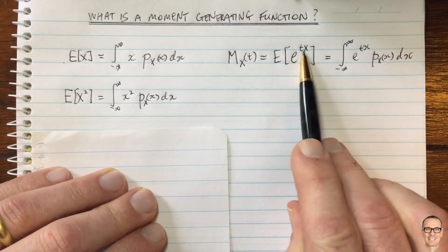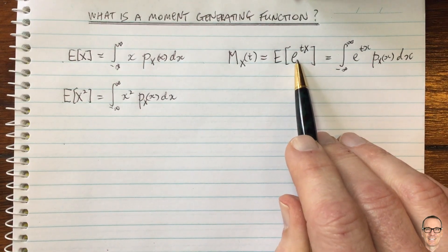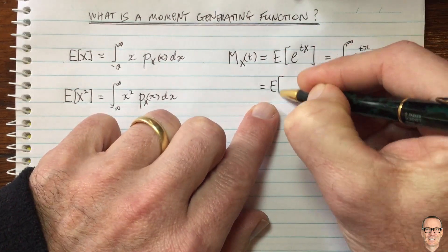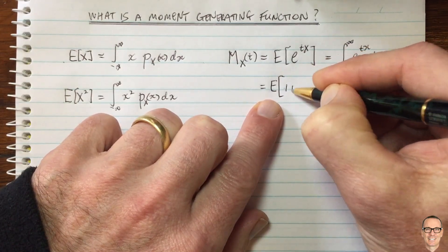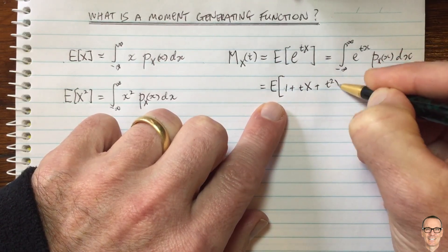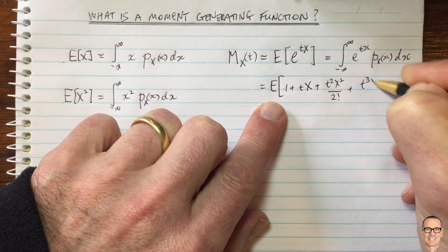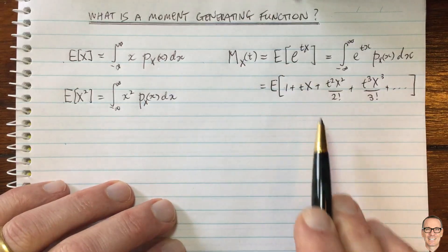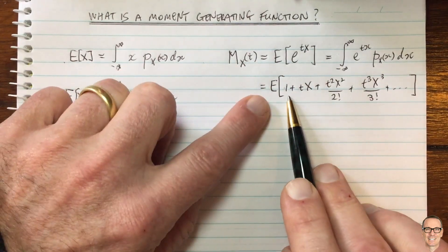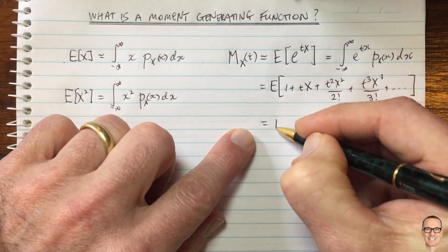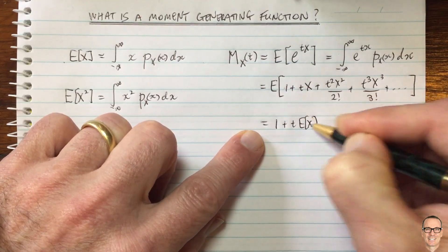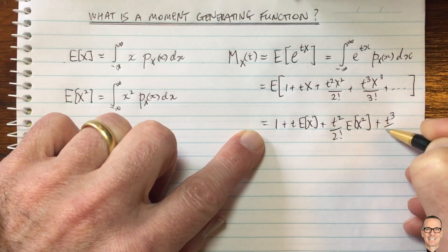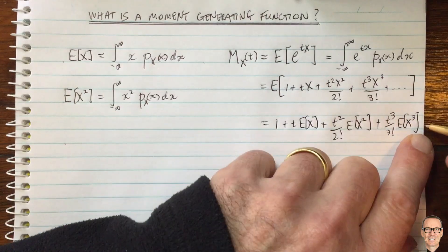Why is this function called the moment generating function? Let's look at the series expansion of e to the tx. The moment generating function also equals the expectation of the expansion: 1 plus tx plus t squared x squared divided by 2 factorial plus t cubed x cubed divided by 3 factorial, and so on. Taking the expectation inside, we get 1 plus t times E[x] plus t squared divided by 2 factorial times E[x squared] plus t cubed divided by 3 factorial times E[x cubed], and so on.